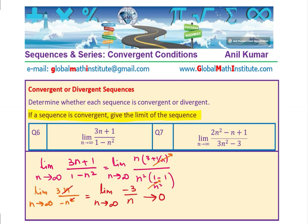Since this limit approaches 0, we also say the horizontal asymptote is y = 0. When n is approaching a large value, the function value approaches 0. The limit is 0.